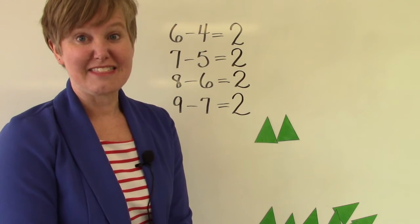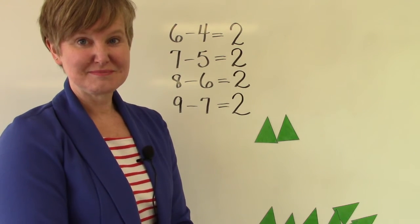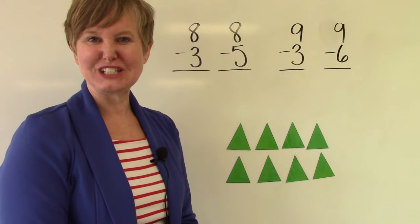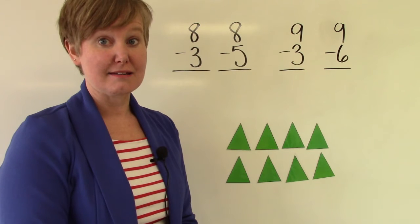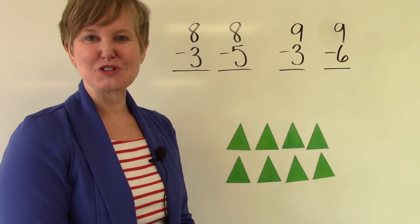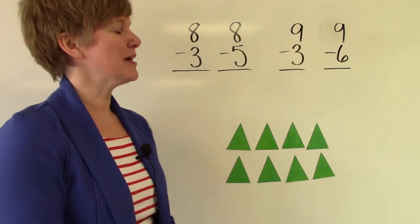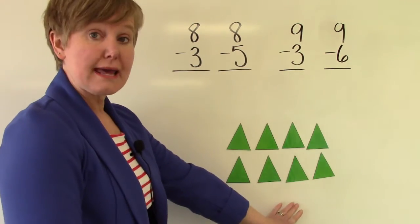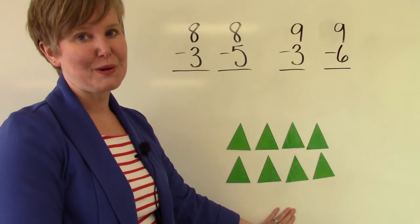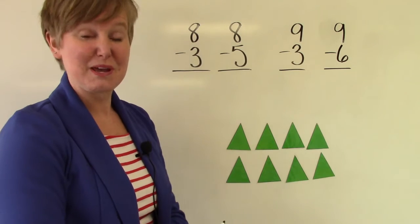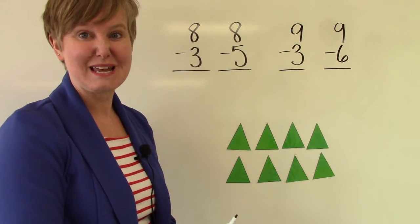Now we're going to look at the next four facts. These are the last four facts that we have to learn today and they kind of work in partners or pairs. Let's look at the first two. Eight take away three and eight take away five. Well, I put eight triangles here on the board and we know it's eight because there's two groups of four. When we have two fours, it makes eight.